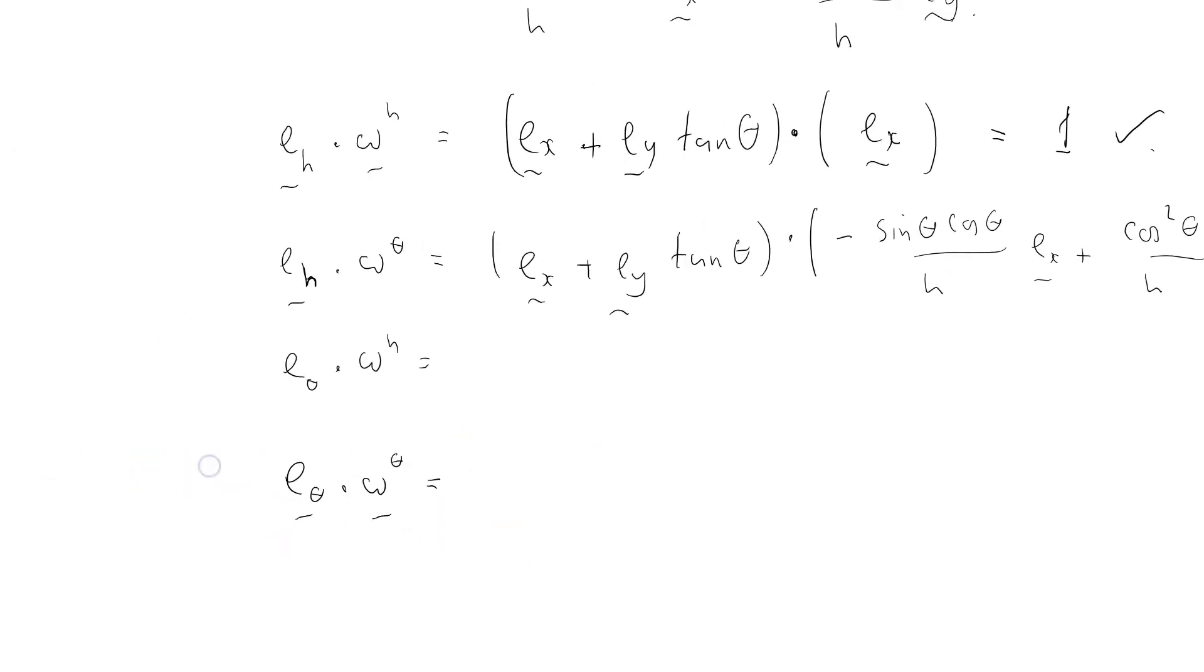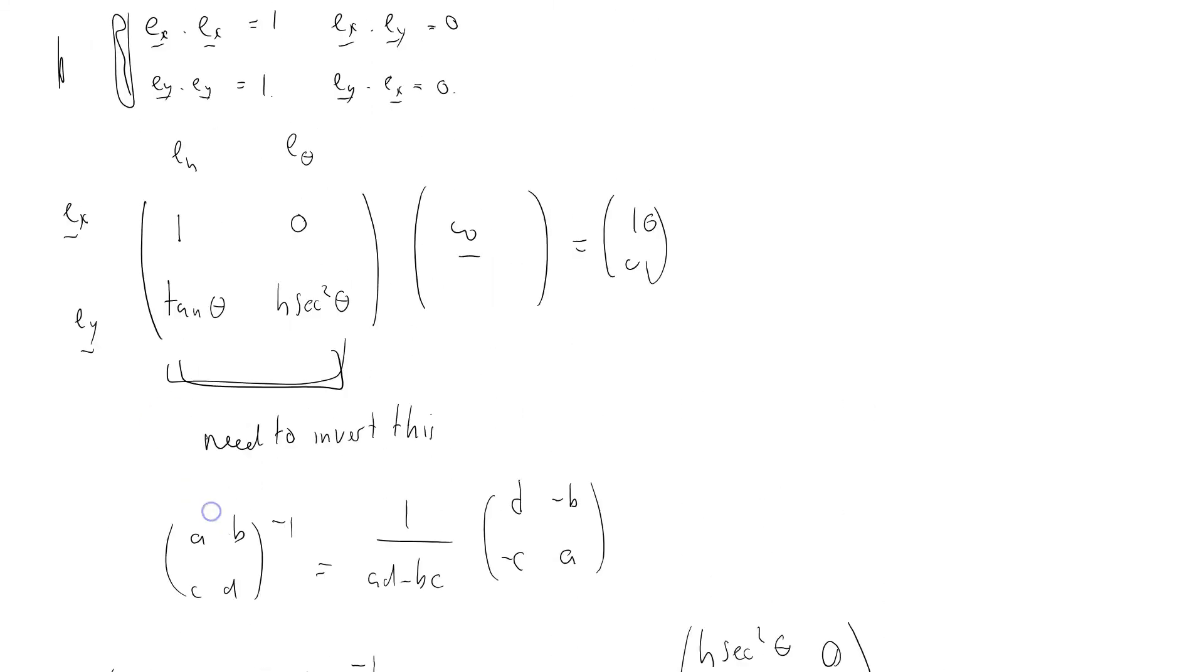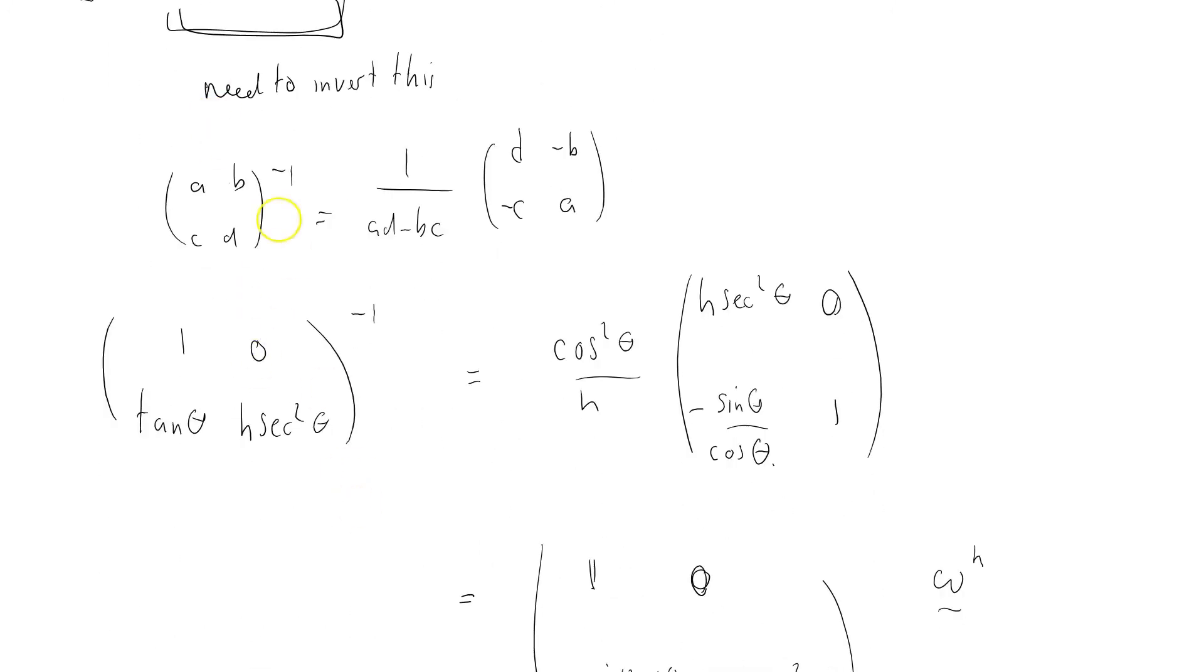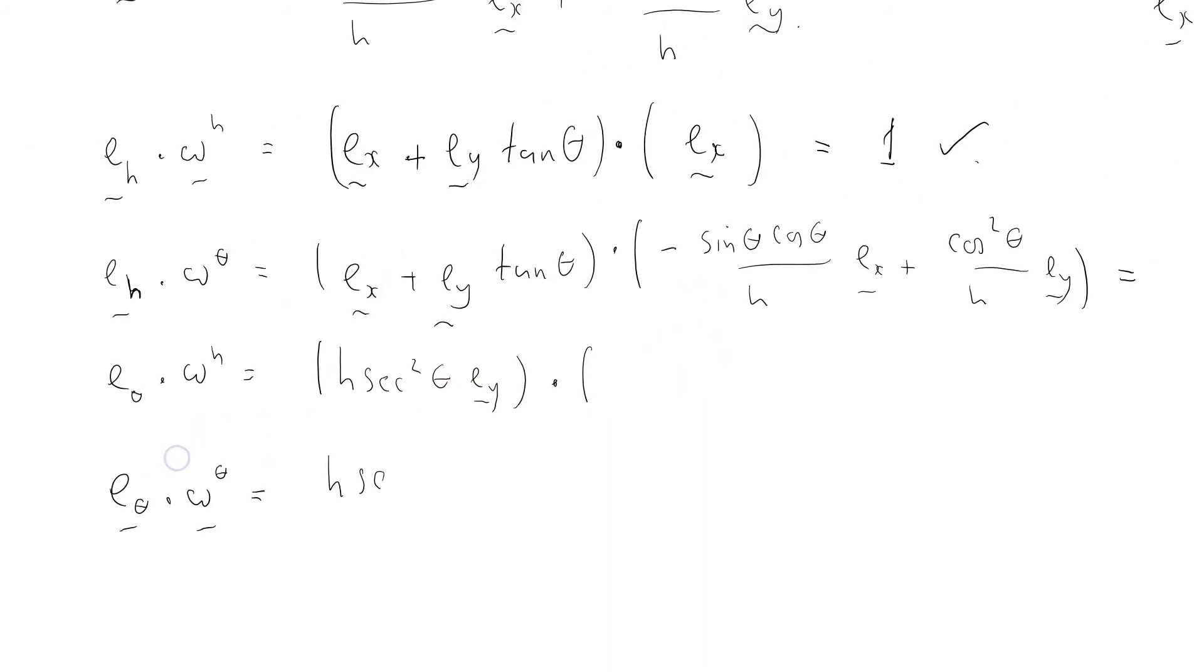What's the next one? So that was 1, that was 0, this had better be 0 as well. E subscript theta—what was that? Can't remember now. Oh, here it is. It's just h sec²θ e_y. H sec²θ e_y · ω^h, where omega h was just e_x from here, which equals 0 because e_x · e_y is equal to 0.